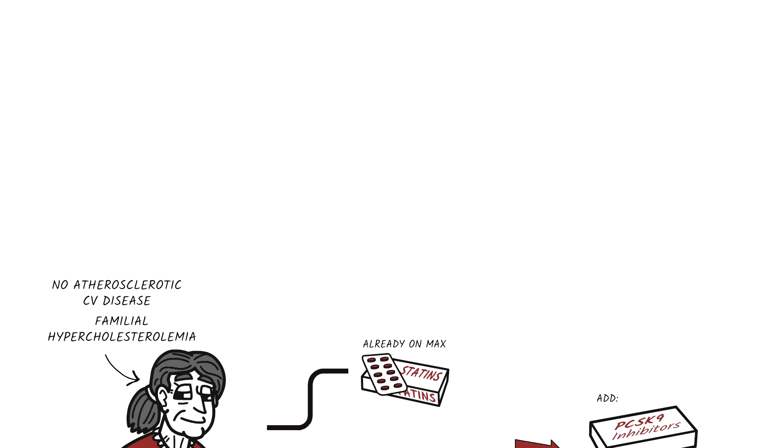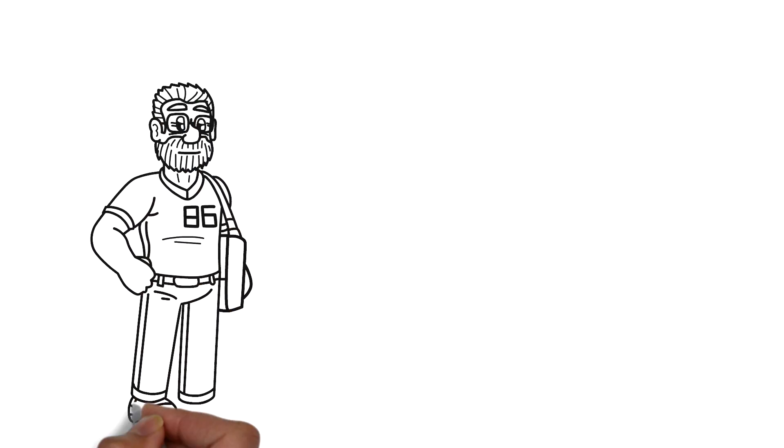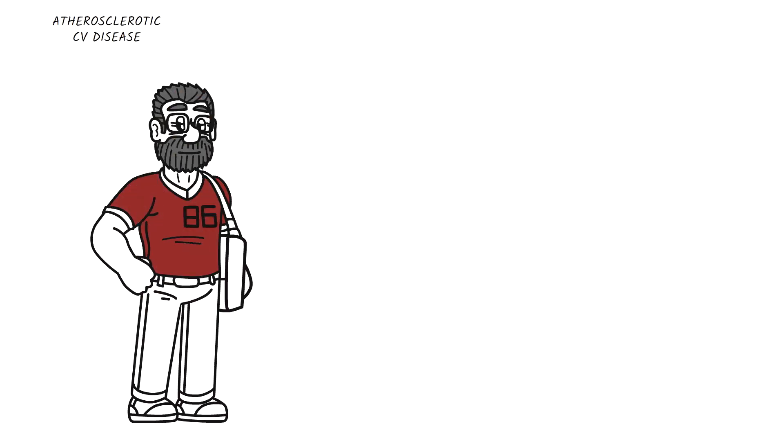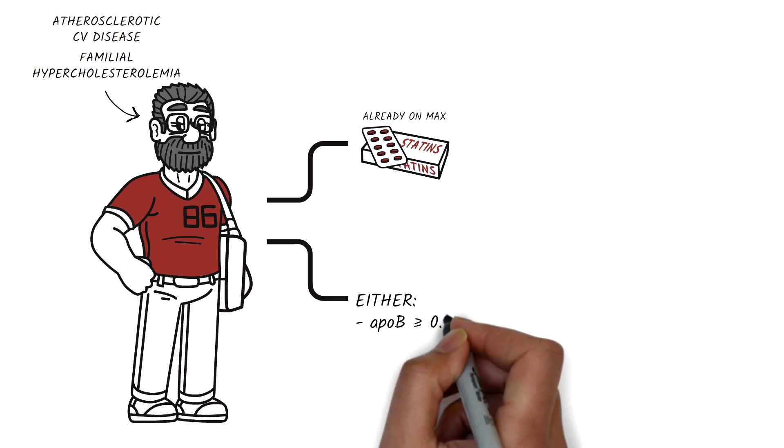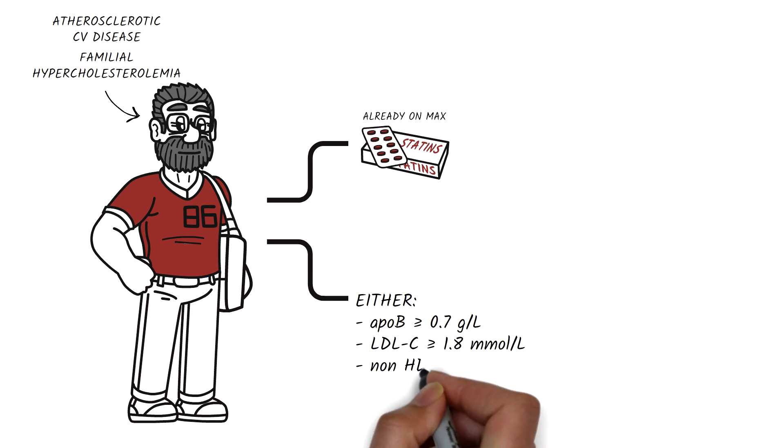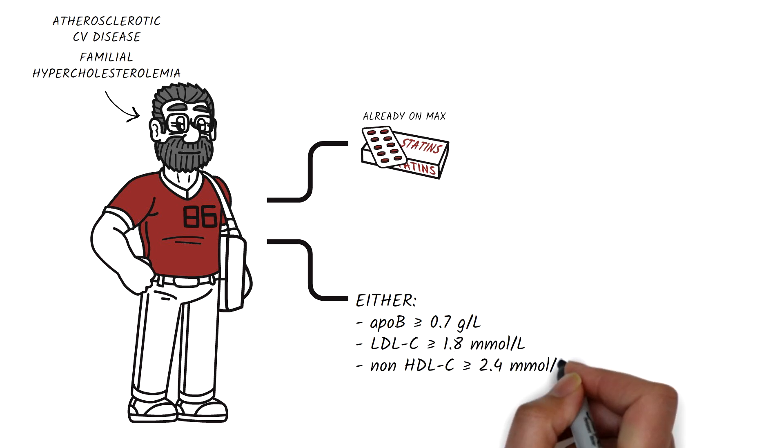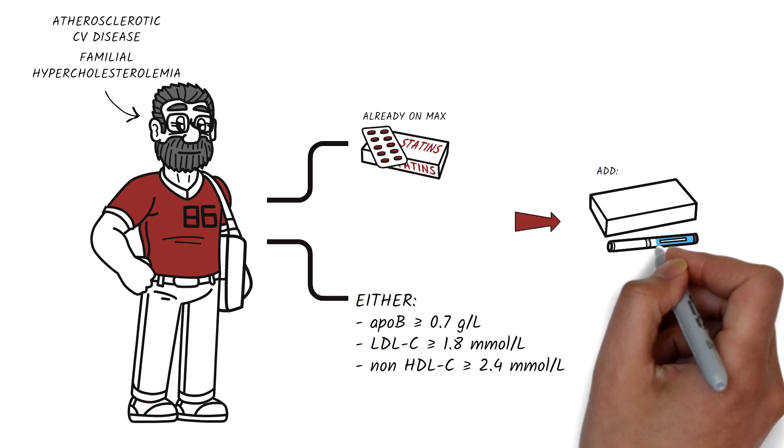If your patient has atherosclerotic cardiovascular disease and has familial hypercholesterolemia and is already on a maximally tolerated dose of statin with or without ezetimibe therapy and their ApoB is greater than or equal to 0.7 gram per liter, or an LDL greater than or equal to 1.8 millimole per liter, or non-HDL-C greater than or equal to 2.4 millimole per liter, then a PCSK9 inhibitor should be added.